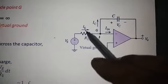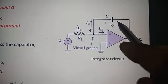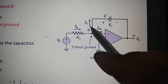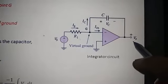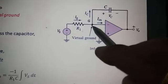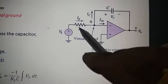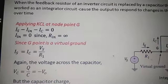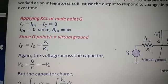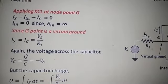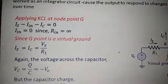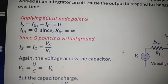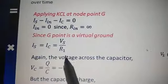R1 is the input resistance and Is is the input current. The capacitor is the feedback component, Vc is the voltage across the capacitor, and ic is the current flowing through the capacitor. This is the virtual ground point because this non-inverting terminal is grounded. Applying KCL at node G: Is - Iin - Ic = 0. Since Iin = 0 because of infinite input impedance, Is is equal to Ic.